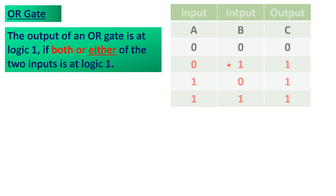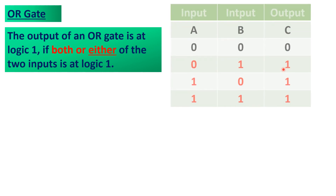The third basic logic gate is what we call an OR gate. As shown in the truth table for an OR gate, the output of an OR gate is at logic 1, meaning high voltage, if both or either of the two inputs is at logic 1. If both inputs A and B are at logic 1, or either input A or input B is at logic 1, those are the conditions for output C to be at logic 1 or high voltage.